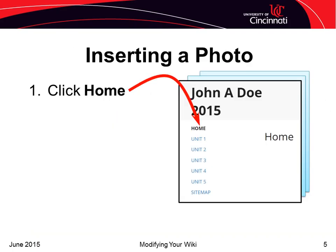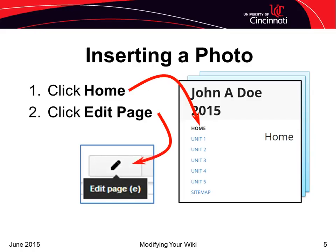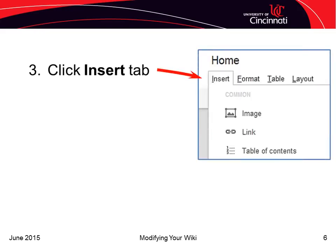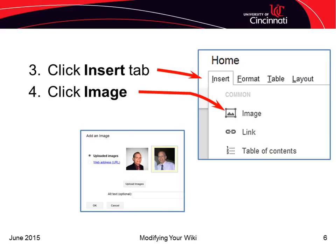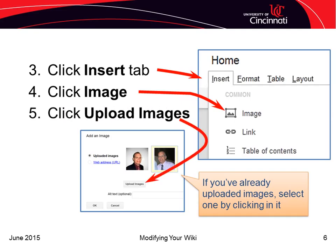Let's start by personalizing your wiki homepage. Make sure you're on your homepage by clicking Home, then click the Edit Page button. Now click the Insert tab, then click Image. This will take you to the Add an Image dialog box, where you can either click on an image that you've already uploaded or upload an image from your computer. We'll assume that you've not uploaded an image, so click the Upload Images button.